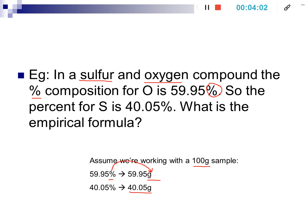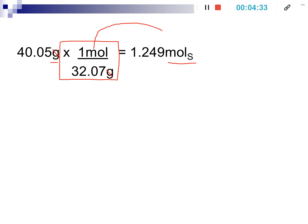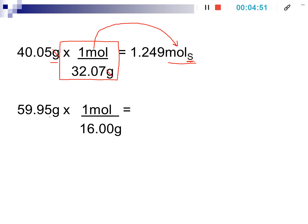The empirical formula is a mole ratio, so we have to take that mass and convert it to moles using a conversion factor. We take our mass in grams and set up a conversion factor using the molar mass of that substance. One mole of sulfur has a molar mass of 32.07 grams, so the grams cancel out and that gives us our moles of sulfur. You should label your units so you don't confuse different substances.